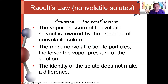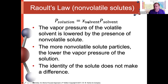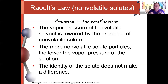We measure the impact of solute on vapor pressure using Raoult's law: the vapor pressure of a solution equals the mole fraction of the solvent multiplied by its normal vapor pressure. The more solute added, the lower the solvent's mole fraction, and the greater the depression of vapor pressure. This is a colligative property — the identity of the solute doesn't matter, only the amount.